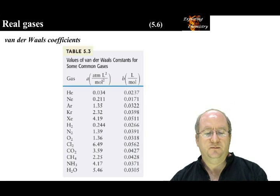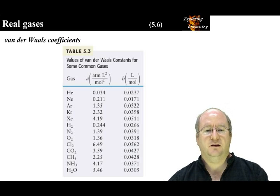Looking at A, helium has the smallest A and chlorine has the largest. Helium does not readily interact with other molecules. Chlorine has many polarizable valence electrons. Ammonia and water are both polar and have large A coefficients.